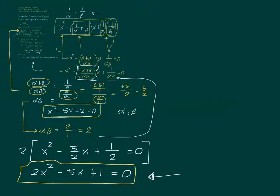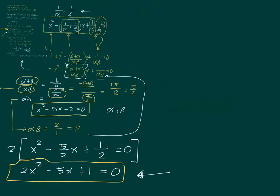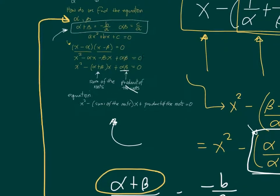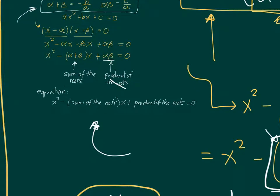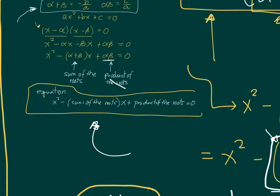It seems like a long solution only because I explained it along the way. The key idea is that the equation is always x squared minus the sum of the roots times x plus the product of the roots equals 0. I hope you understand the explanation. I'll make a follow-up video where I use the idea more directly, so make sure you watch this one first since the core idea is explained here.